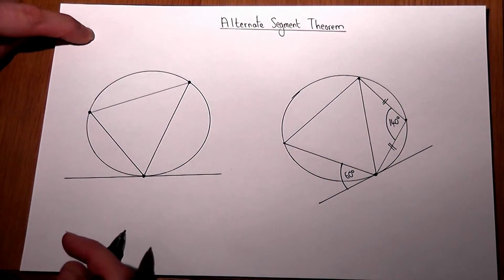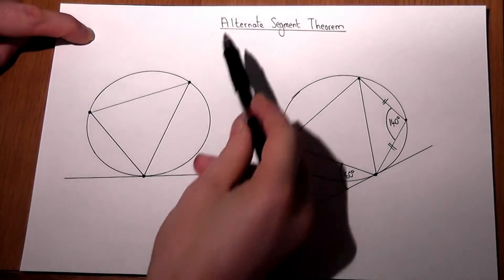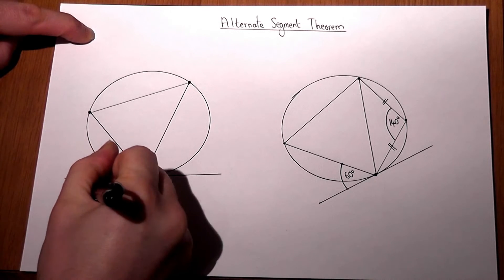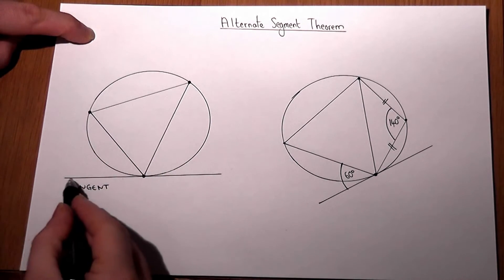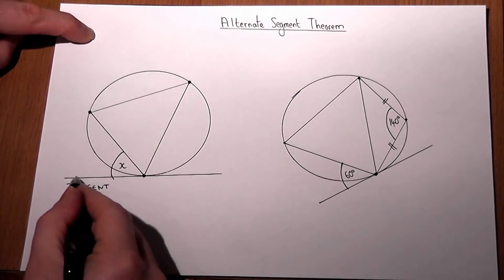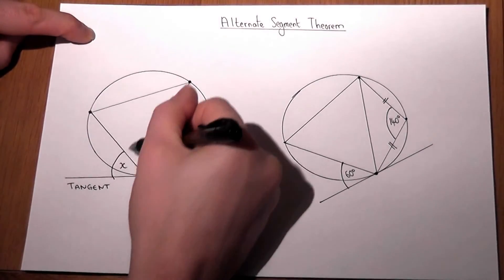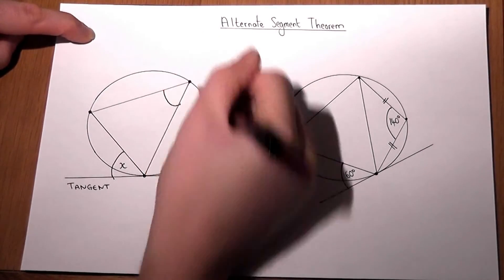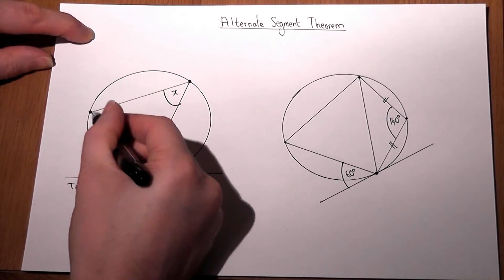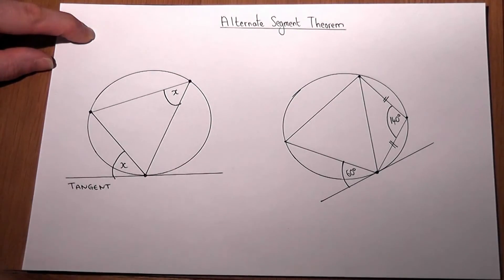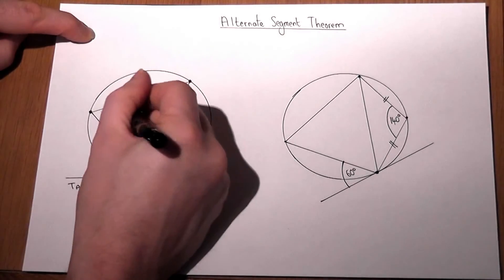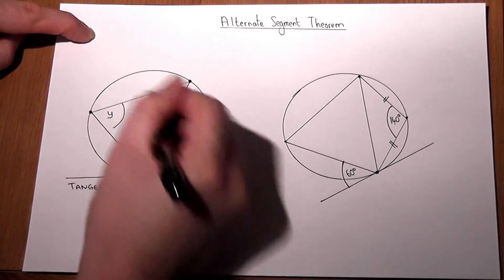The one main circle theorem you must be able to name in the exam is called the alternate segment theorem. If you've got a tangent — a line which just touches the circle — and if we know the angle x here from the tangent up to the triangle, then the opposite angle up here is also x. Similarly, if you know this whole angle here is y, then the angle over here will also equal y. So you must learn that configuration for the exam.